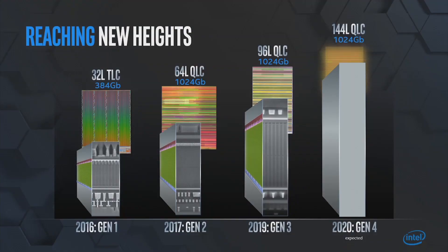Now let me talk about what we're trying to do in terms of scaling. We've started with 32-tier, 64-tier, 96-tier, and we are actually on to our next gen, which we call Gen 4, with a 144-layer technology. This is significant because most of the rest of the industry is marching to a 128-layer tier, and we are already marching towards 144. That again amplifies the aerial density advantage that we have in terms of floating gate.